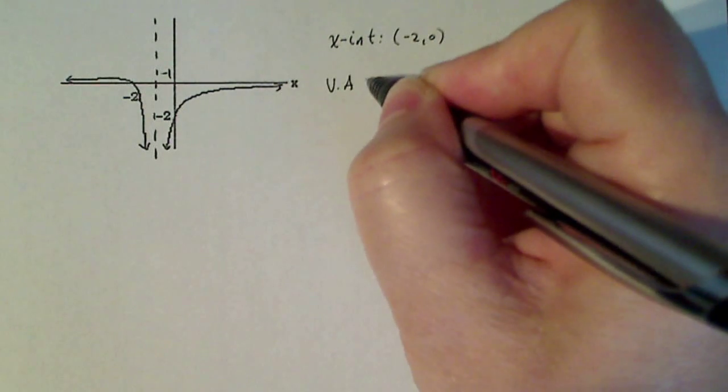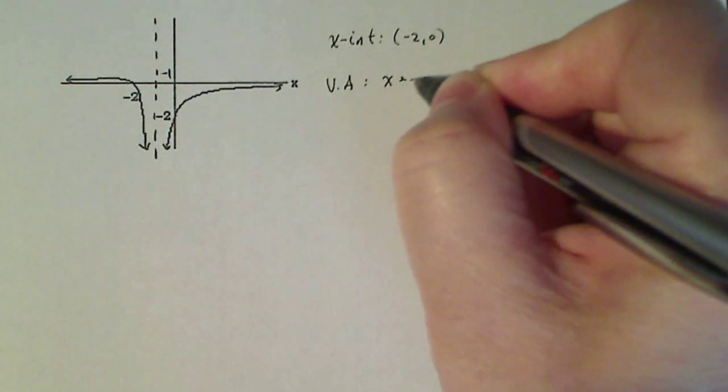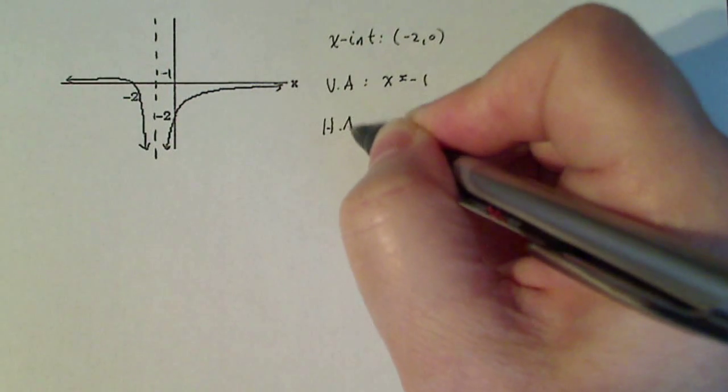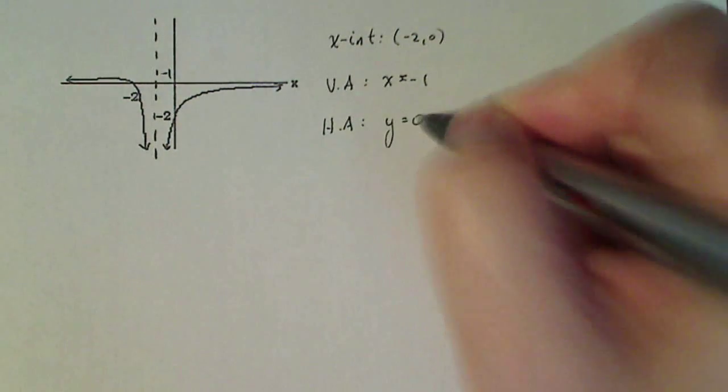My vertical asymptote, I have one that occurs at x equals minus one. And I have a horizontal asymptote at y equals zero.